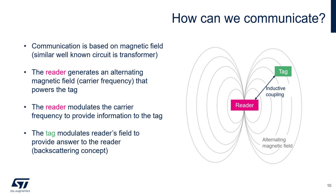In an NFC system, communication is based on a magnetic field. The simplest way to think about this is to think of it as a transformer. The reader generates an alternating magnetic field, which is the carrier frequency, and that powers the tag. The reader then modulates that carrier frequency to be able to talk to the tag. And finally, the tag modulates the reader's field to provide an answer to the reader.